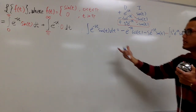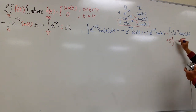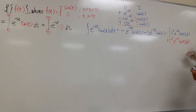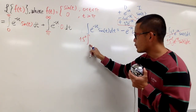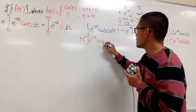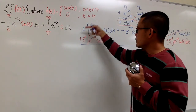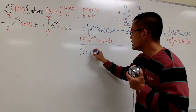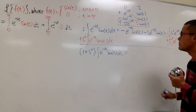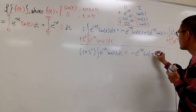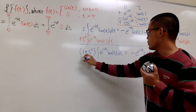The function part of the remaining integral matches the original. So we add s squared times the integral of e to the negative st sin(t) dt to both sides. This gives (1 + s²) times the integral of e to the negative st sin(t) dt equal to negative e to the negative st cos(t) minus s e to the negative st sin(t). Dividing everything by (1 + s²) gives us the result.